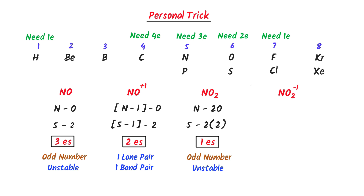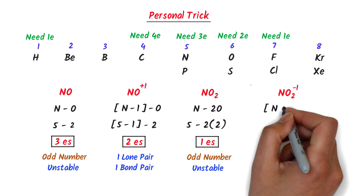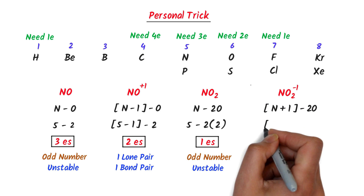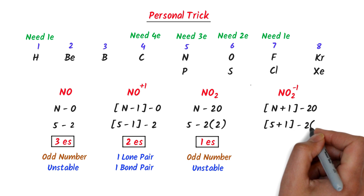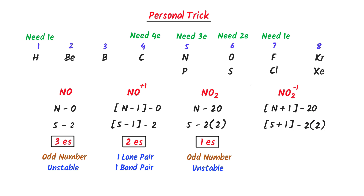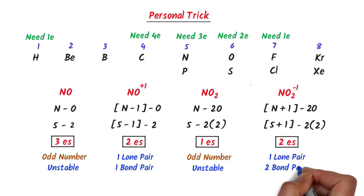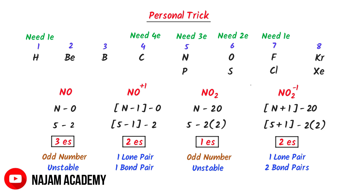In case of NO₂⁻, I write N plus 1 minus 2 oxygen: 5 plus 1 minus 4 equals 2 electrons. So there is 1 lone pair of electrons present in this molecule, and we can see that there are 2 bond pairs of electrons present. Thus, using this simple trick, we can easily calculate the bond pairs and lone pairs of electrons in any molecule.